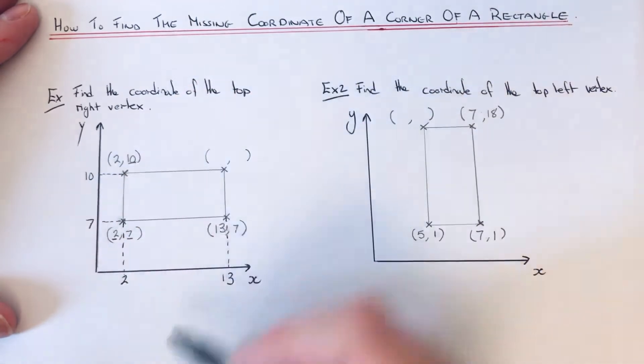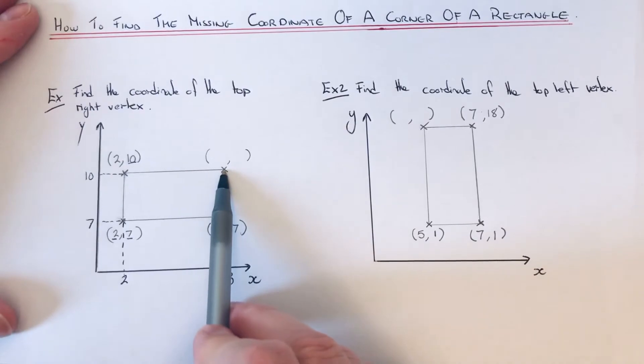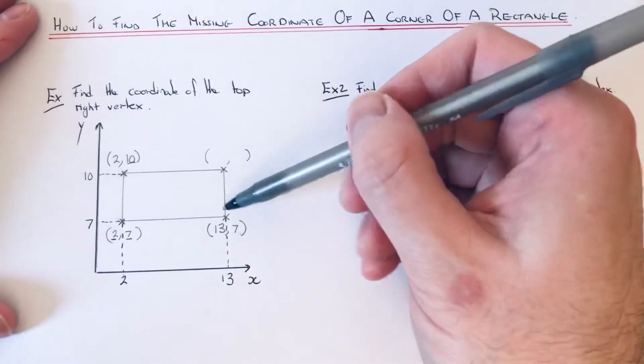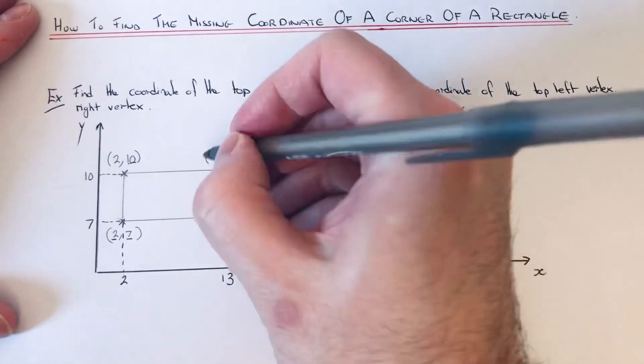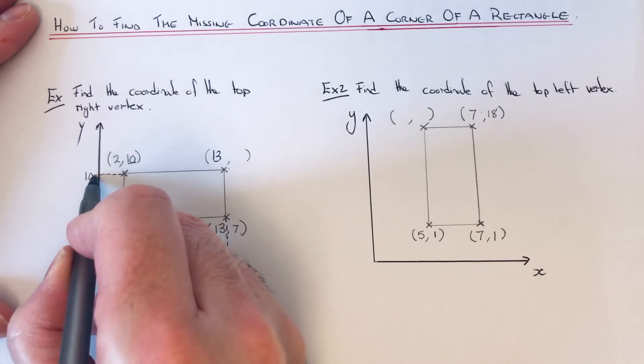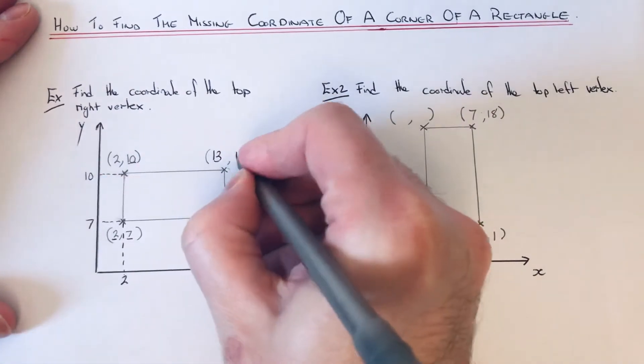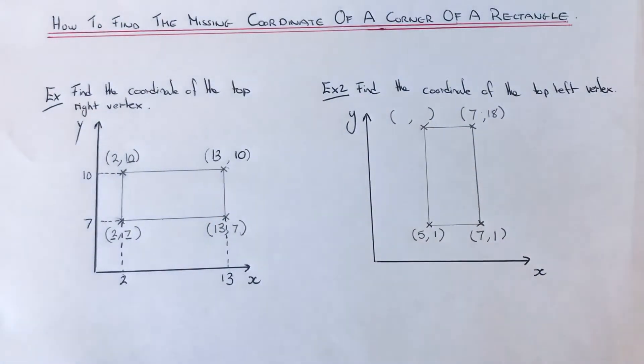We can now figure out what this coordinate is here. We need the x-coordinate first, so if we just look at what it is on the x-axis, that's thirteen. Then we need the y-coordinate second - that's ten. So our missing corner has a coordinate of thirteen comma ten.